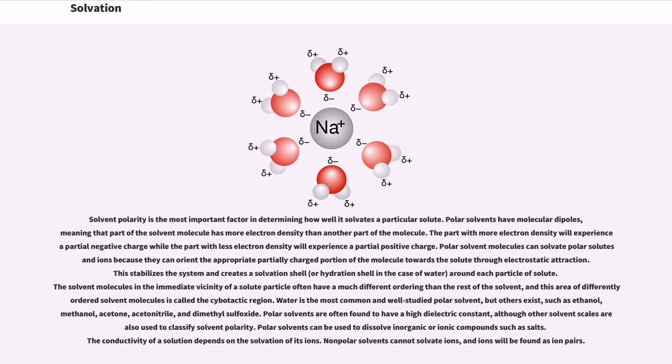Solvent polarity is the most important factor in determining how well it solvates a particular solute. Polar solvents have molecular dipoles, meaning that part of the solvent molecule has more electron density than another part of the molecule. The part with more electron density will experience a partial negative charge while the part with less electron density will experience a partial positive charge.